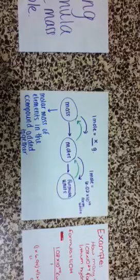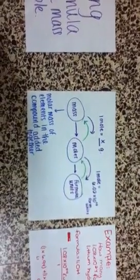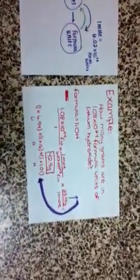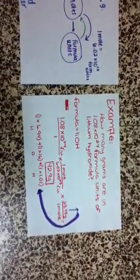You find the mass by multiplying the subscripts times the molar mass of the element and then adding them all together. So an example would be how many grams are in 1.08 times 10 to the 24th formula units of lithium hydroxide.